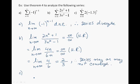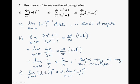For part c, we find the limit of the n-th term as n approaches infinity, which equals negative infinity because we have -1.3 raised to the power n as n goes to infinity. Therefore Theorem 4 tells us the series diverges. This confirms what we already knew, since this is a geometric series with r = -1.3, and the absolute value of r, which is 1.3, is greater than 1, so the geometric series diverges.